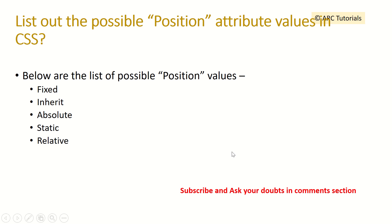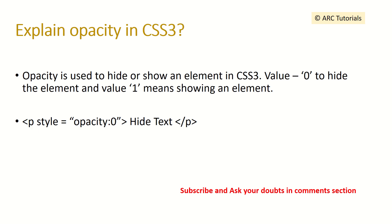List all possible position attributes in CSS: fixed, inherit, absolute, static, and relative. Explain opacity in CSS3 — opacity is used to hide or show an element. A value of 0 hides the element, a value of 1 shows it fully, and values between 0 and 1 (like 0.5) make it partially transparent.